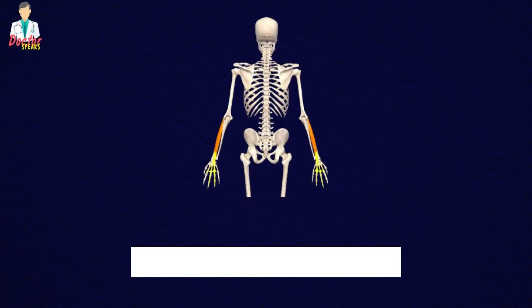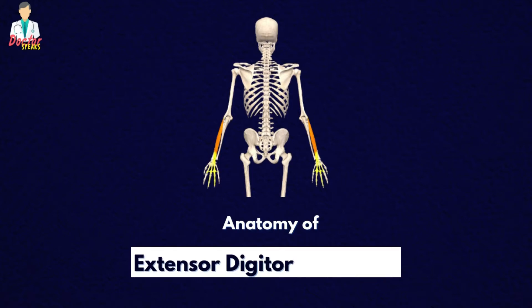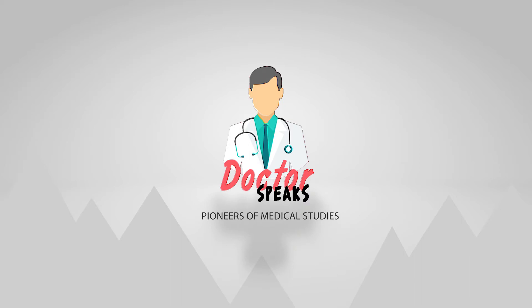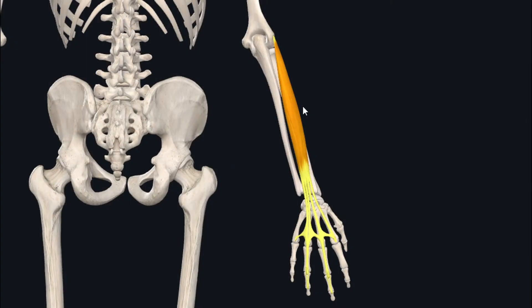Welcome back. In this tutorial we will study the anatomy of the extensor digitorum muscle. The extensor digitorum is a long fusiform type of skeletal muscle and is one of the superficial muscles of the posterior compartment of the forearm.